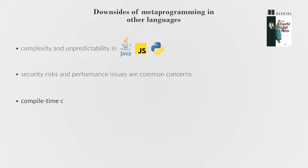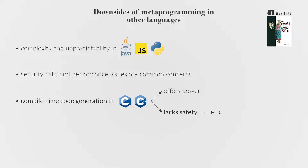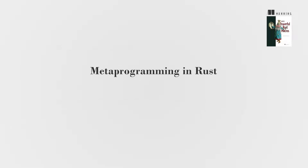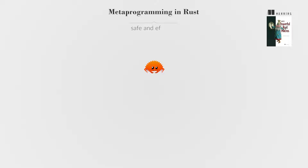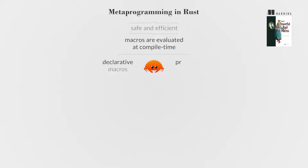Security risks and performance issues are common concerns. Compile-time code generation in languages like C and C++ offers power but lacks safety and can lead to unintended consequences. Rust's approach to metaprogramming is safe and efficient, with macros that are evaluated at compile time. Rust has two kinds of macros — declarative and procedural — with the latter split into three: derive, attribute, and function-like.